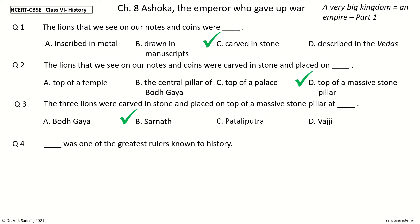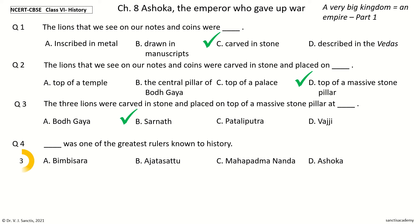Question 4: Blank was one of the greatest rulers known to history. The options are: Bimbisara, Ajatasattu, Mahapadmananda, Ashoka. The answer is Ashoka. So Ashoka was one of the greatest rulers known to history.